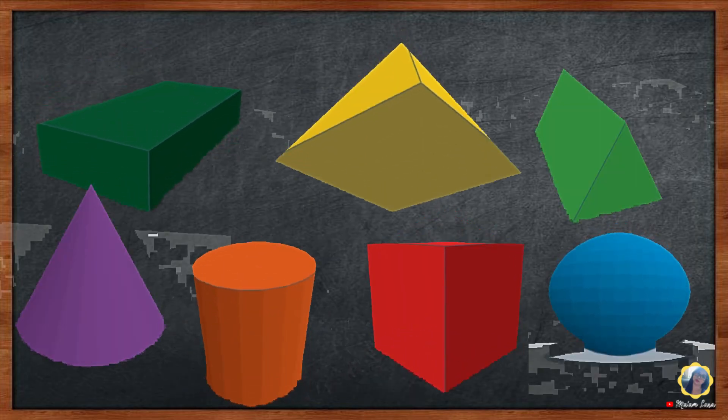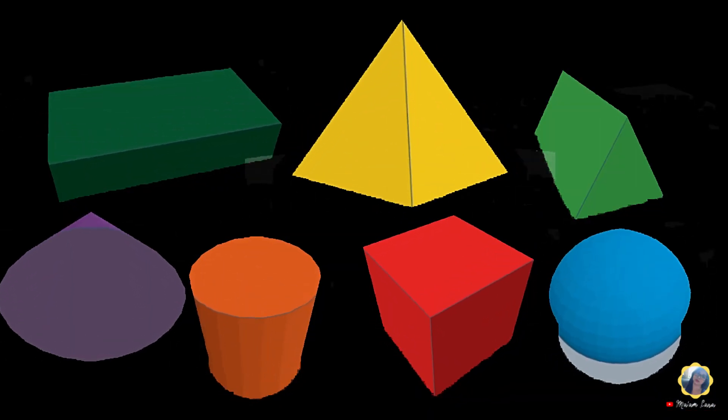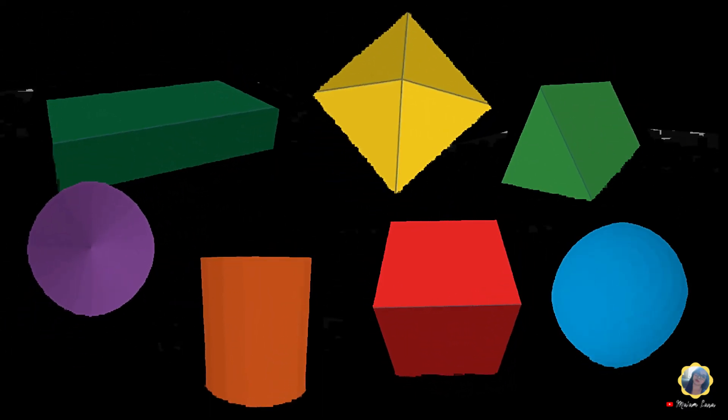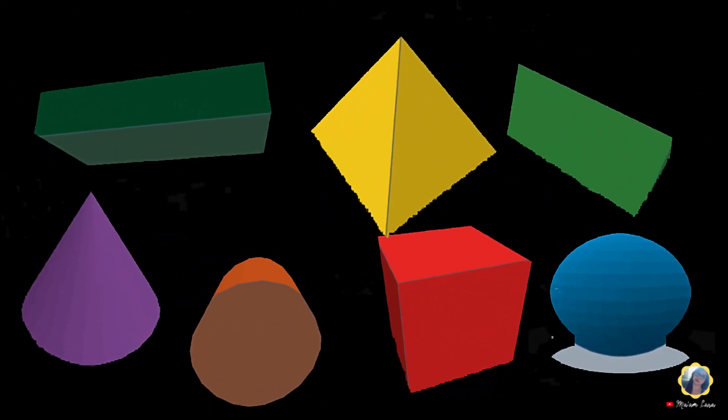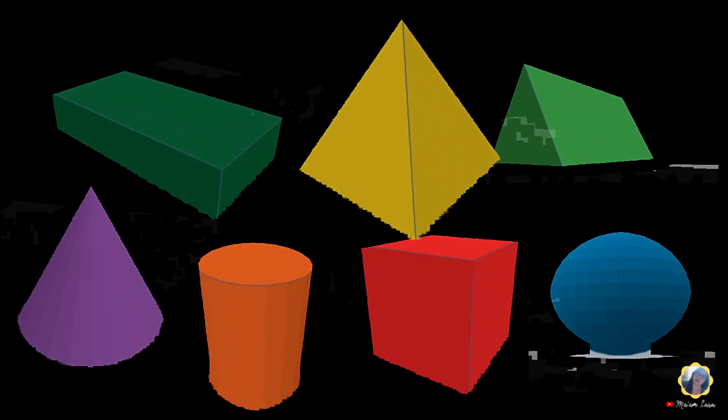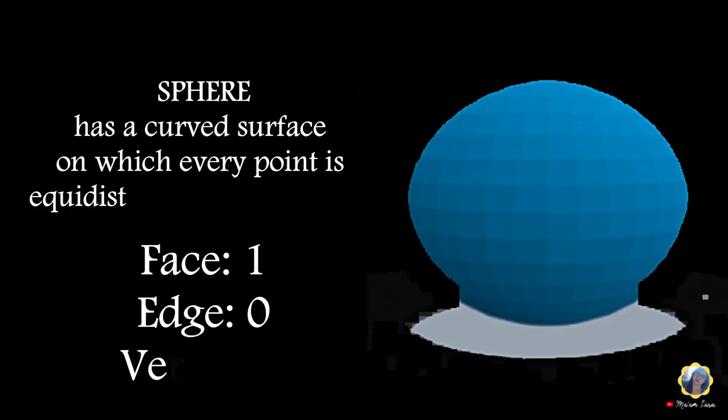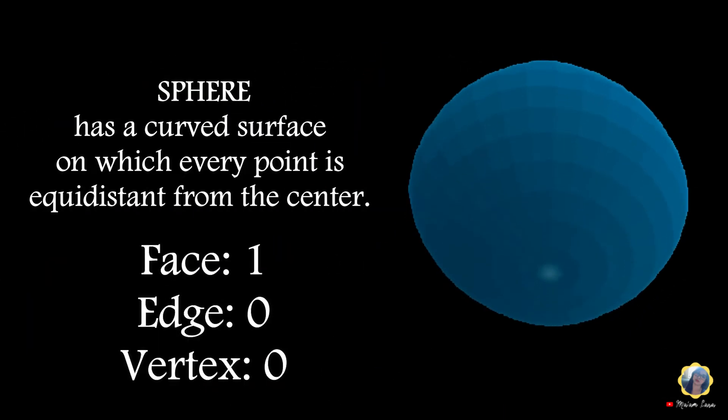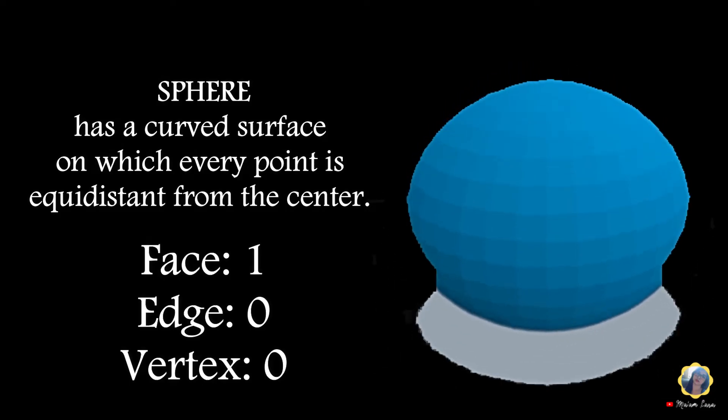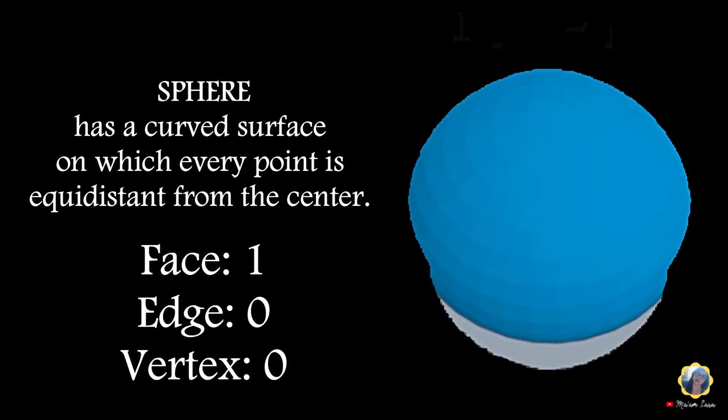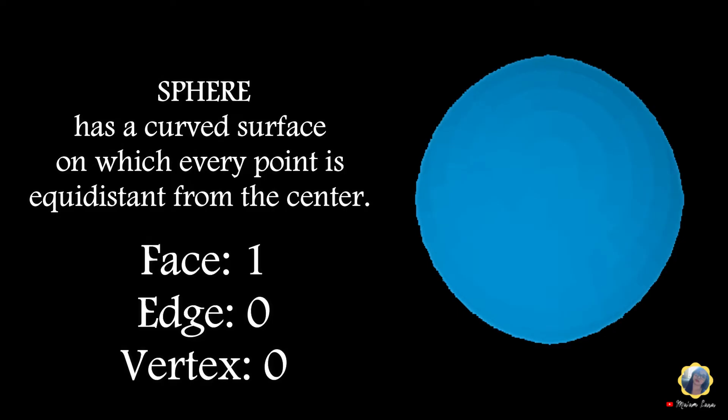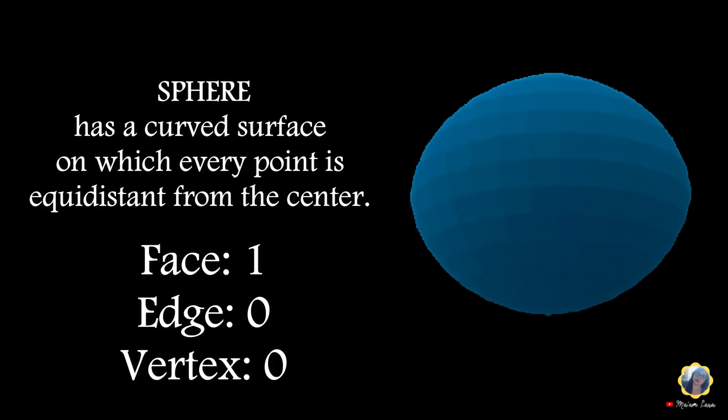Let us describe the following solid figures. Sphere: has a curved surface on which every point is equidistant from the center. Faces: 1. Edge: 0. Vertex: 0.